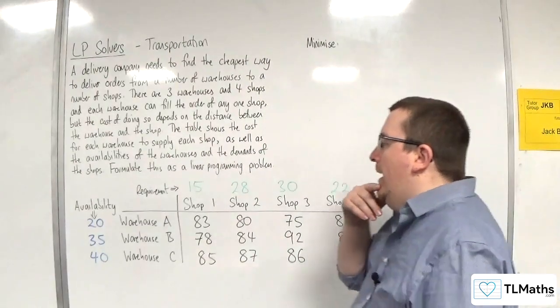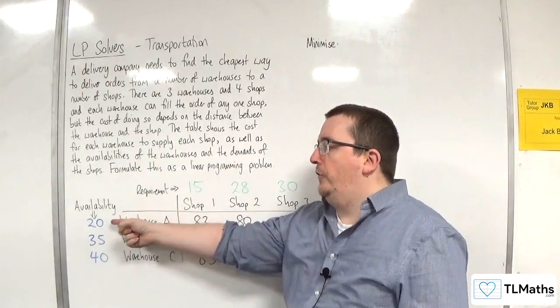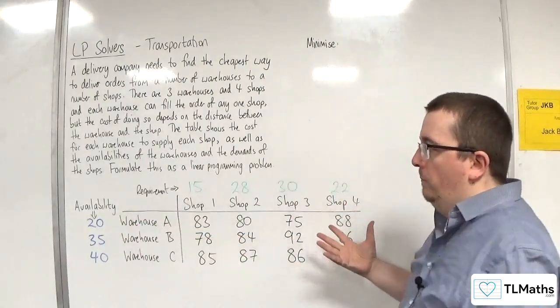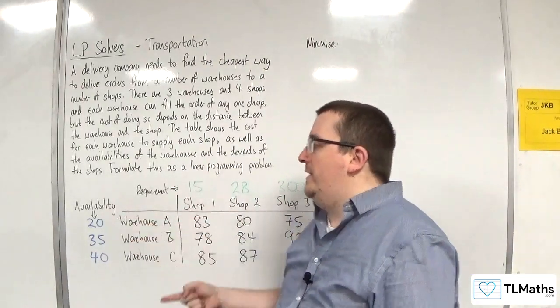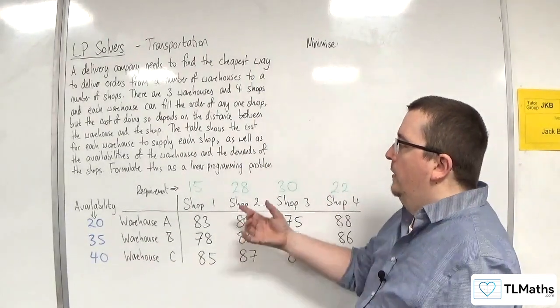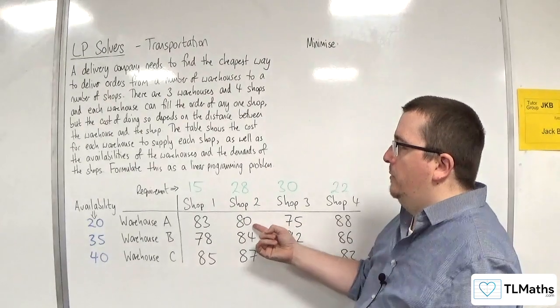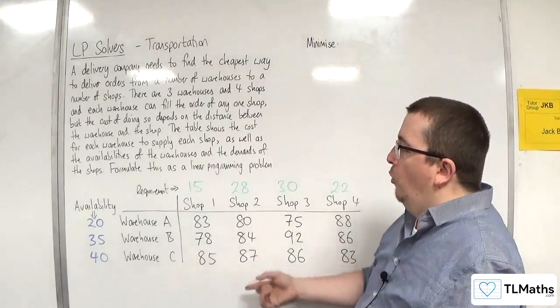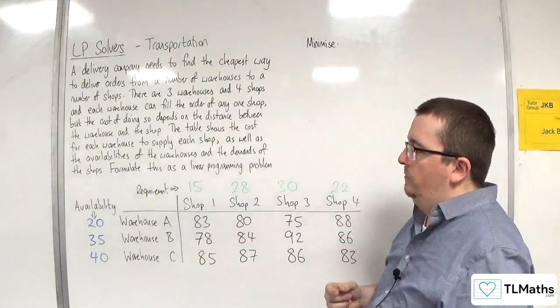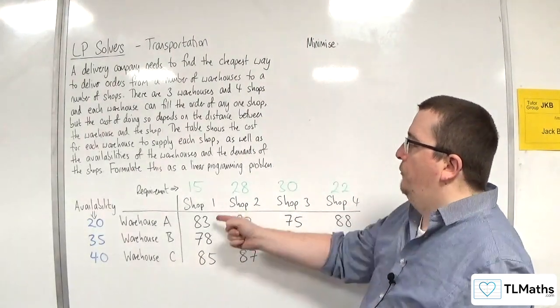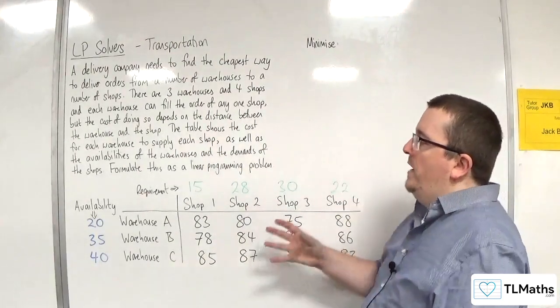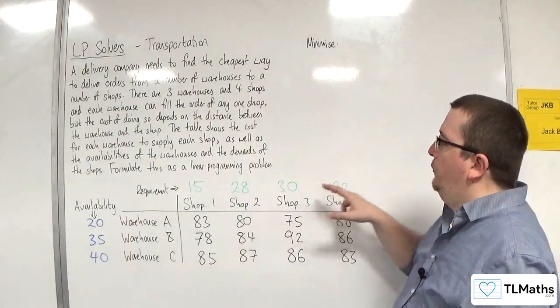Now, warehouse A has got to send out 20. So all of these have got to be sent out to the shops. Warehouse A has got to send out 20. It could send all 20 to shop two, for example, or it could send out 10 to shop one and 10 to shop two, or it could send out five to each of the four shops.